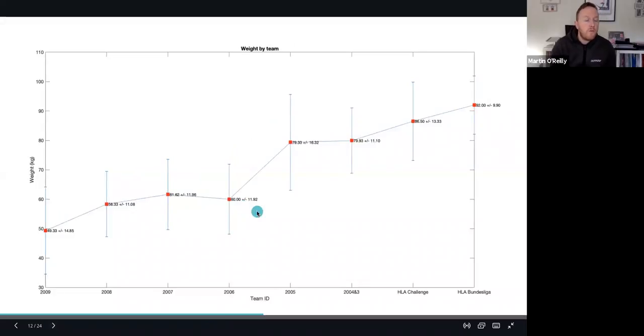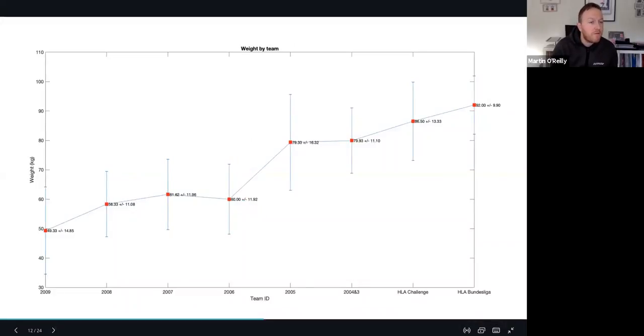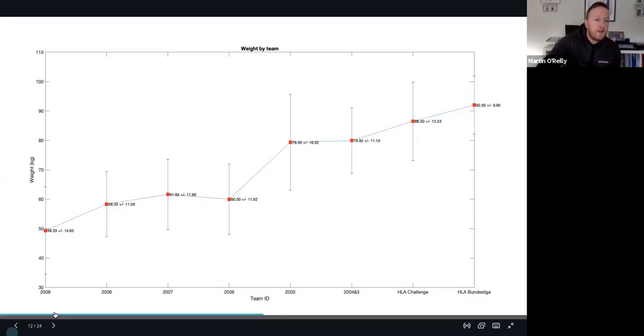In terms of weight, we see the players grow from an average of about 50 kilos at age 11 and 12 up to an average of about 92 kilos on the Meisterleiger team. Again there's a lot of variance on each team and you can imagine that is again due to player size, player training age and also player position as well.